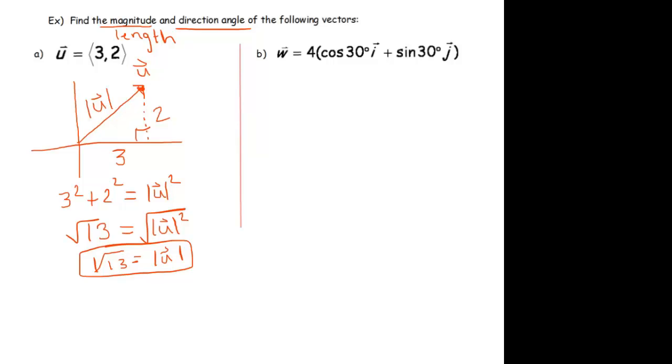To get the direction angle, we label theta in our picture. So, we want to find that angle there. So, how do we find the angle when we know the size of the triangle? Well, one thing to notice is that the tangent of the angle is 2 over 3.